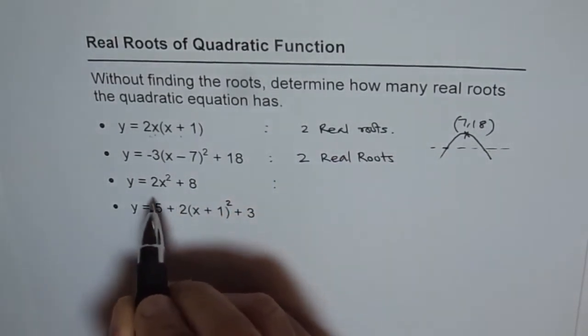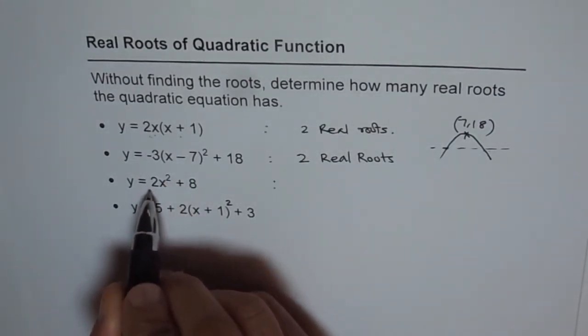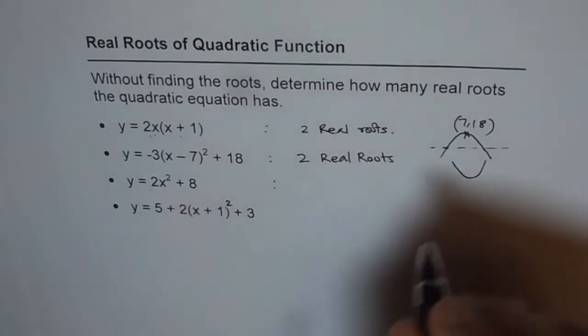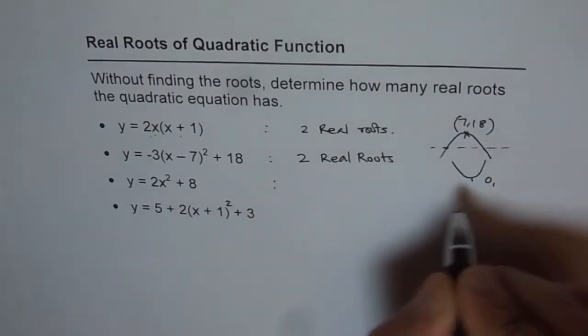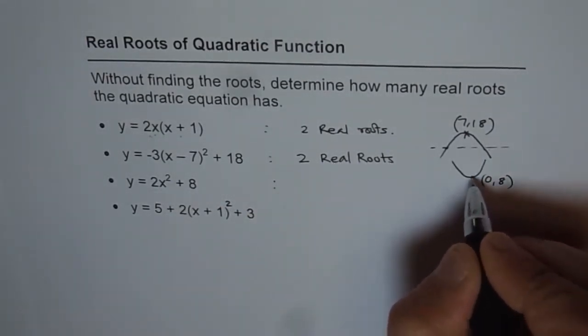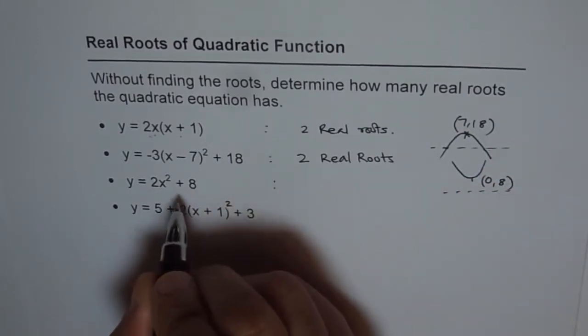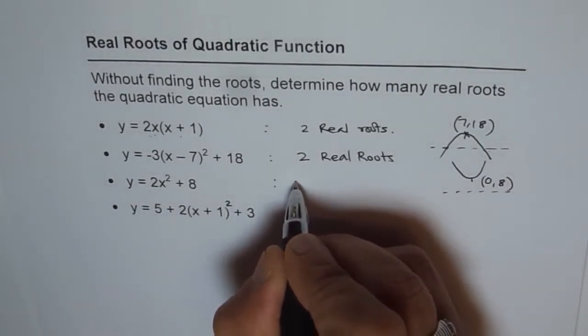Now this one is 2x squared plus 8. Here the parabola opens upwards. So in this case the parabola is opening upwards. The vertex is at x equals to 0 and y equals to 8. Now 8 is positive and if the parabola opens upwards, it is not going to cross the x axis. Therefore in this particular case we have 0 roots. No real roots.